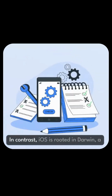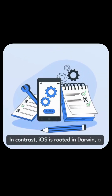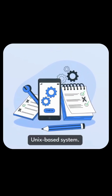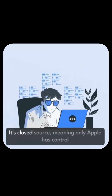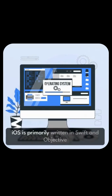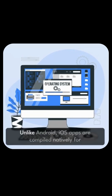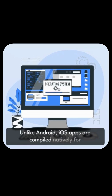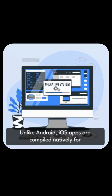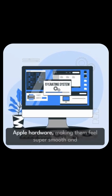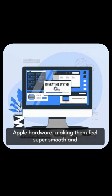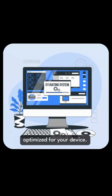In contrast, iOS is rooted in Darwin, a Unix-based system. It's closed source, meaning only Apple has control over its code. iOS is primarily written in Swift and Objective-C. Unlike Android, iOS apps are compiled natively for Apple hardware, making them feel super smooth and optimized for your device.